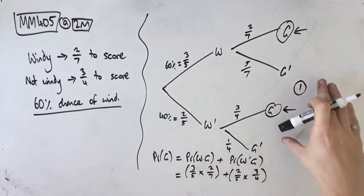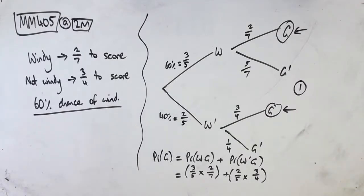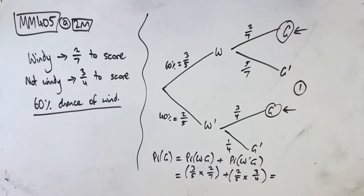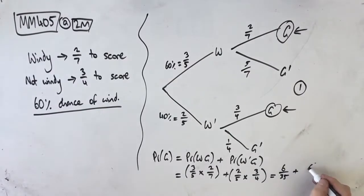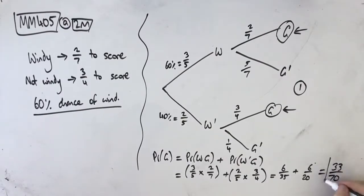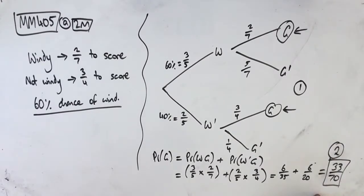So this equals 6 on 35 plus 6 on 20, which comes out as 33 on 70. So 33 on 70 is our second and final mark for part A. Keeping in mind that you don't have a CAS, so please don't use it for this — it's really good to get in the habit of doing these fractions in your head and by hand. That's it for part A, let's move on to part B.